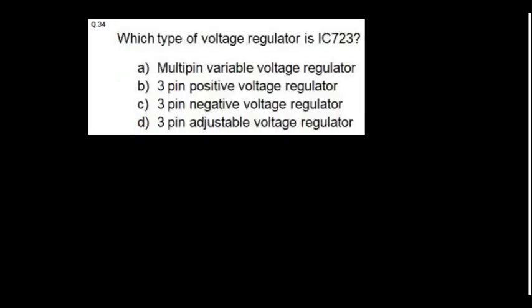This type of voltage regulator is IC723. It is 14 pin variable voltage regulator. We can configure it as a high voltage high current or high voltage low current. Different configurations we can make with this voltage regulator IC.